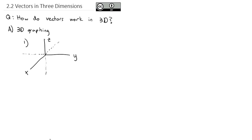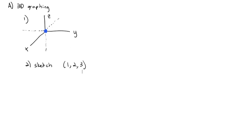So the origin is just a fixed point out in space. And so if we were asked to actually sketch a point, let's sketch the point 1, 2, 3. This becomes quite a tricky task to do in two dimensions, but we'll do the best we can here. We'll have our z-axis, our y-axis, and the x-axis forming the corner of the house.